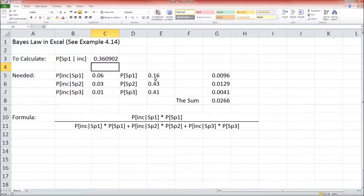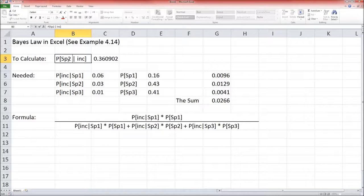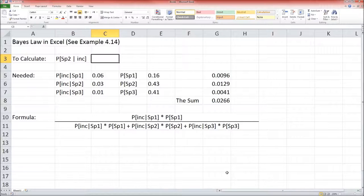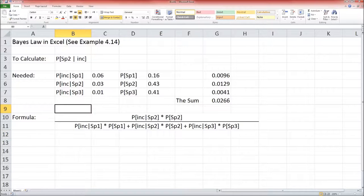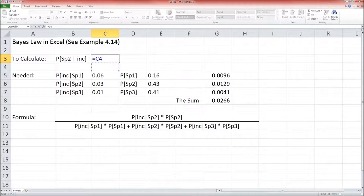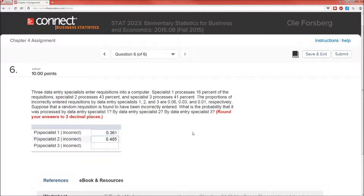Well, what would it be for specialist 2? Going back to this Excel formula, what changes? Okay, got to change that to a 2. But now that we do that, what changes here? That's a 2, and that's a 2. That's a 2, which means this value is equal to this 0.0129 divided by that sum. 484962. I have to do that to 3 decimal places. So I'll just click on this reduce. So I don't have to try to guess 0.485. Cool.